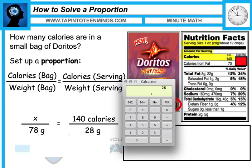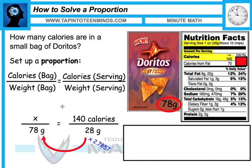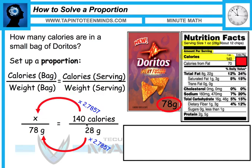By dividing the weight of the bag by the weight of a serving, we see that it is 2.78 and change times bigger. So that means that 28 grams times 2.78 and change will give us 78 grams.